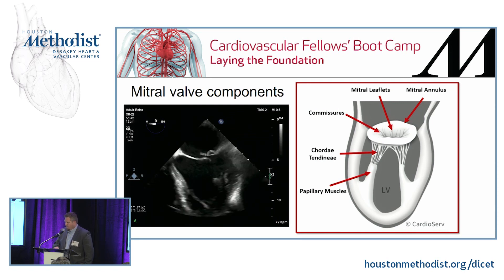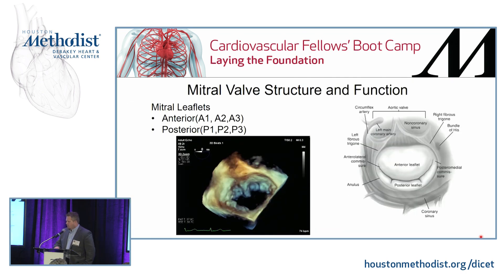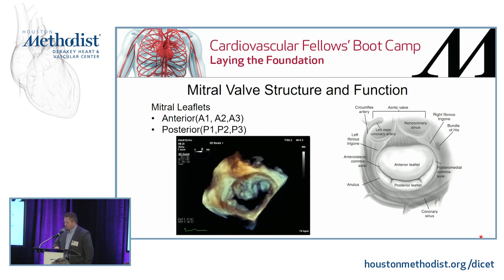This image shows abnormal coaptation — a flail segment of the posterior leaflet — but the purpose is to illustrate that normal coaptation of the leaflet tips is required to prevent regurgitant flow back into the left atrium during systole. Here is a 3D image showing the anterior and posterior mitral valve leaflets.